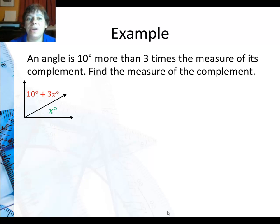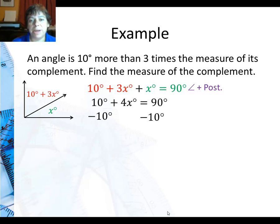Now, since I know they're complements, that tells me they add up to 90. So I set up an equation. 10 plus 3X plus X equals 90. That's the angle addition postulate. Then I combine like terms.